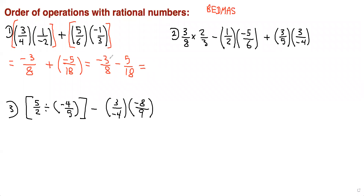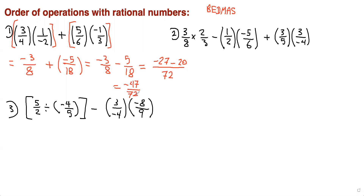We need to find a common denominator for negative 3 over 8 minus 5 over 18, which is 72. 72 divided by 8 is 9, times negative 3 is negative 27. 72 divided by 18 is 4, times 5 is 20. Therefore this equals negative 27 minus 20, which is negative 47 over 72.